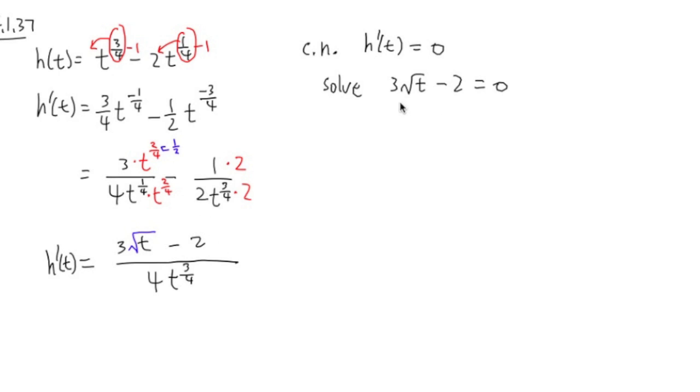So to do this, add 2 on both sides. 3 square root of t is equal to 2. Divide both sides by 3. Square root of t is equal to 2 over 3. And we can square both sides to get rid of the square root. Let's get rid of the square root and the square. I will get t is equal to 2 third squared, which is 4 over 9. This is one situation for the critical number, where the derivative is equal to 0.